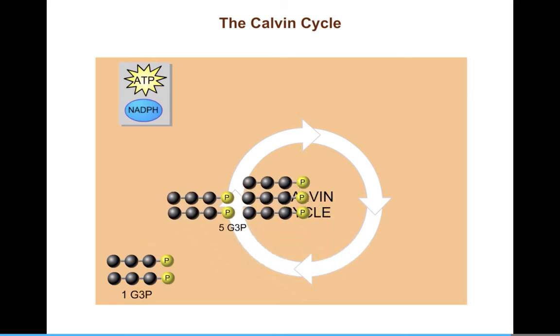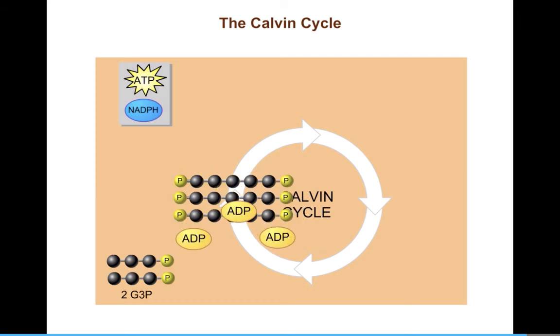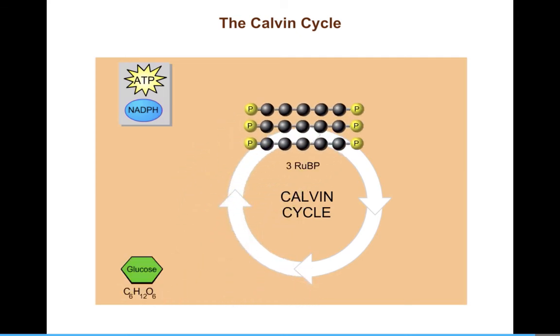G3P is the actual final product of the Calvin Cycle. The cell can combine two G3Ps to make glucose, which stores the energy that chlorophyll originally captured from the sun.